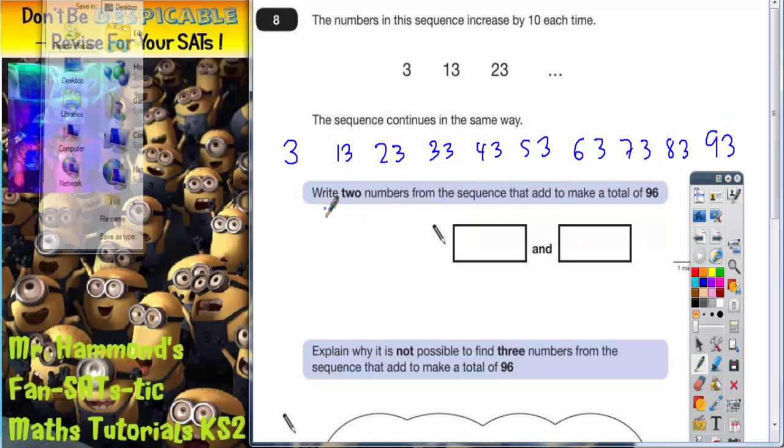Now there is more than one answer to this question. For example, if you choose 93 to make 96, that's going to pair up with 3, because 93 and 3 makes 96. So you could have 3 and 93.